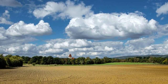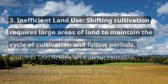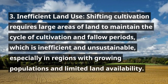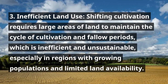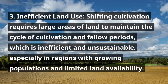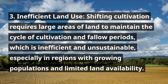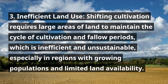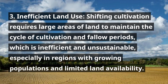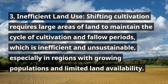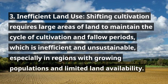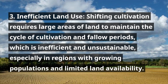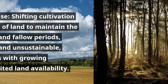3. Inefficient Land Use. Shifting cultivation requires large areas of land to maintain the cycle of cultivation and fallow periods, which is inefficient and unsustainable, especially in regions with growing populations and limited land availability.